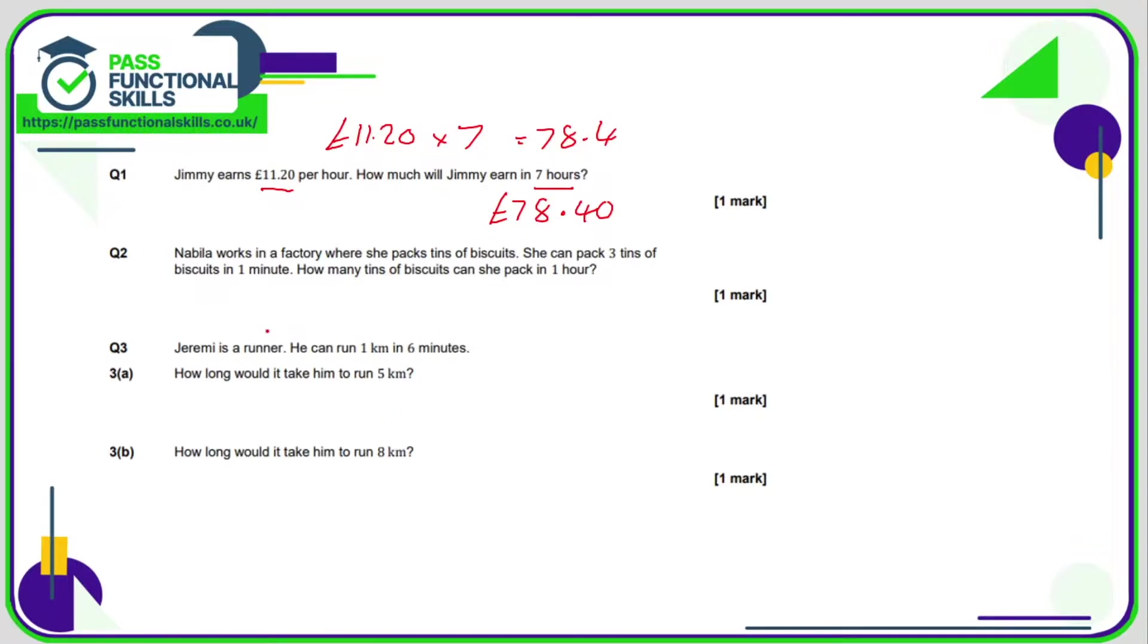Question number two, no calculator for this one. If Nabila can pack three tins in a minute, in one hour—well, one hour is 60 minutes—so that's 60 times three, which is 180. Question number three: we just need to assume that it's the same speed that he runs at, so if he does one kilometer in six minutes then five kilometers is going to be five times six minutes, which is 30 minutes. And for 3b, it's simply eight times six, which is 48 minutes.